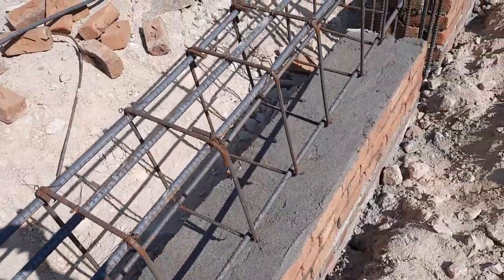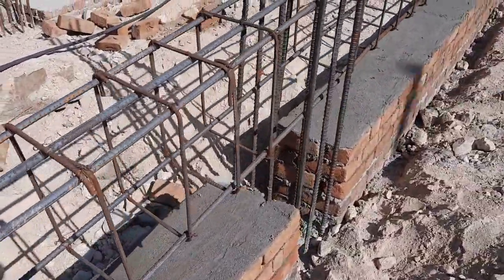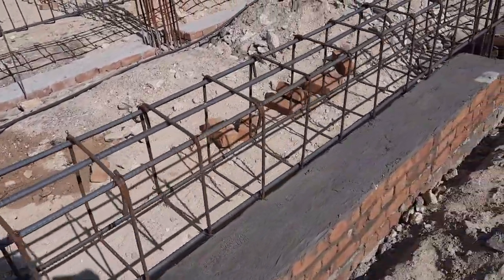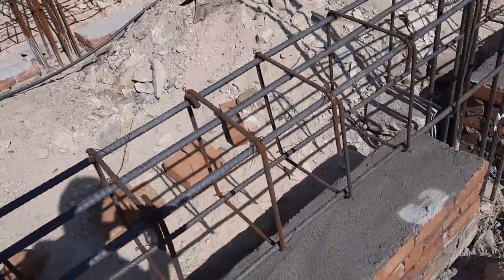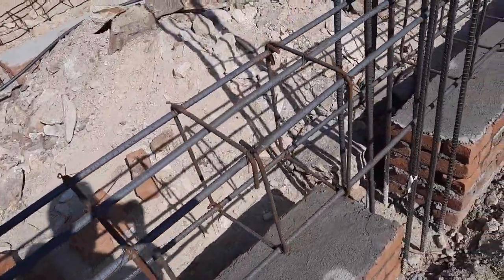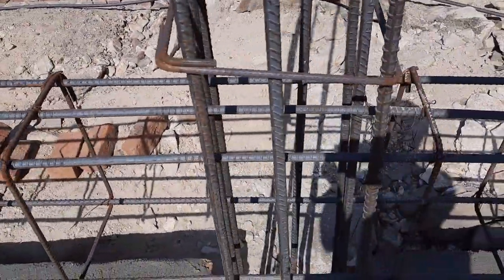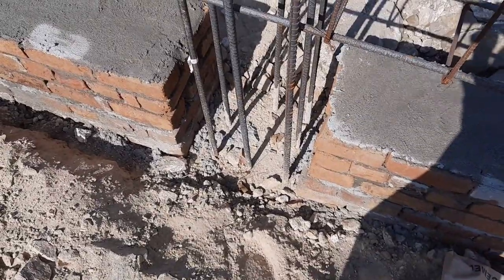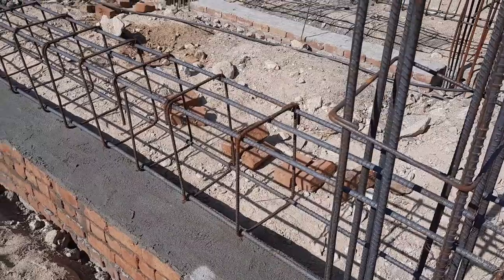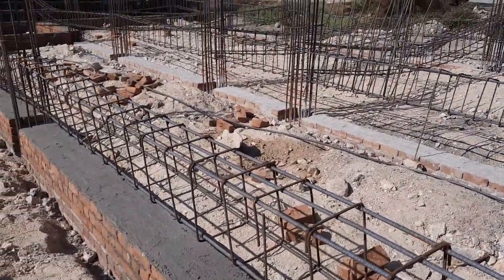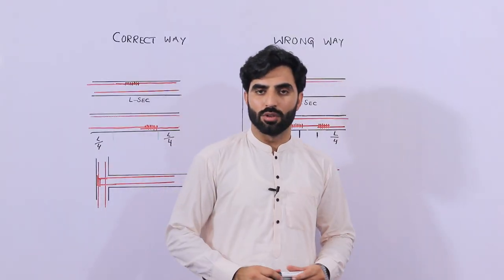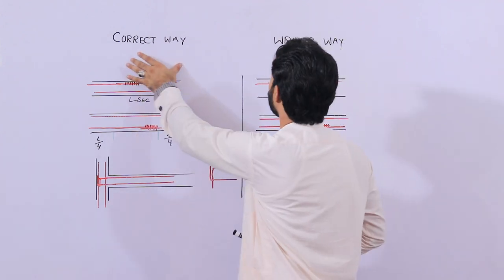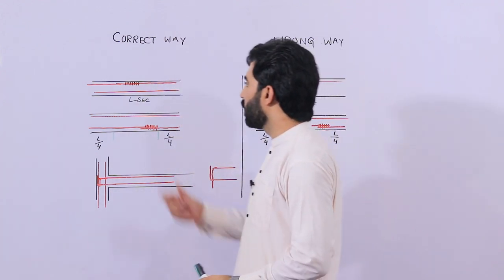Now I will guide you about what is the proper place for the lapping length. As you can see in this video, at the start they placed the lapping at the distance of L/4 at the bottom portion. I will show you the correct way of plinth beam construction — let me guide you for the correct and wrong way of steel reinforcement. So let's get started: this is the correct way and this is the wrong way.